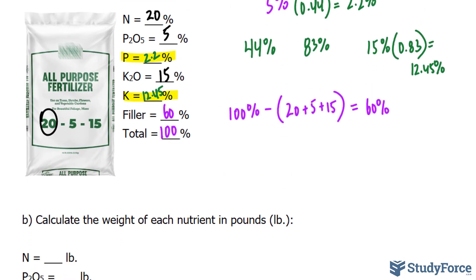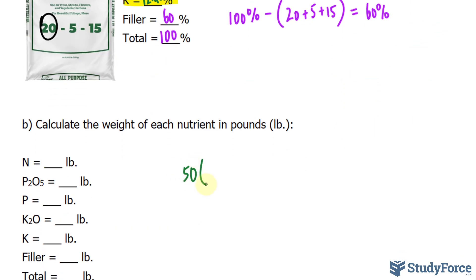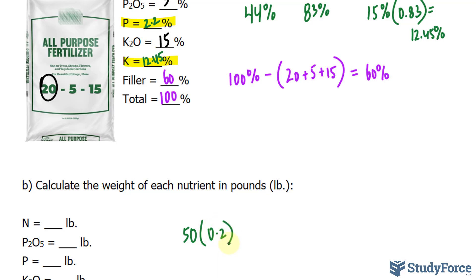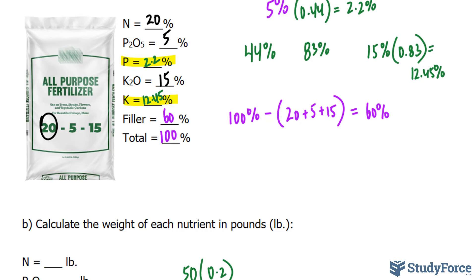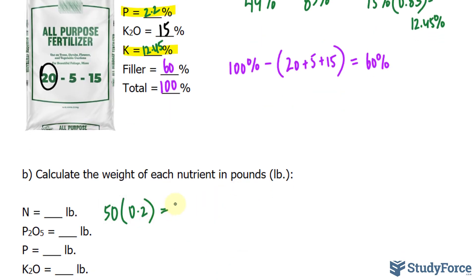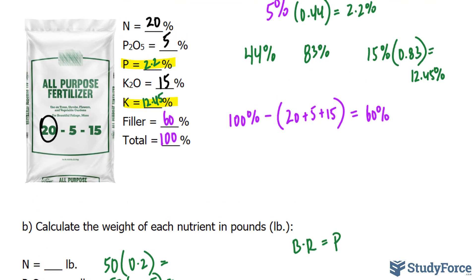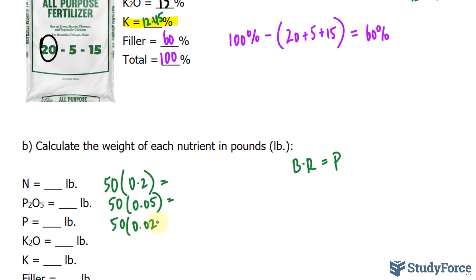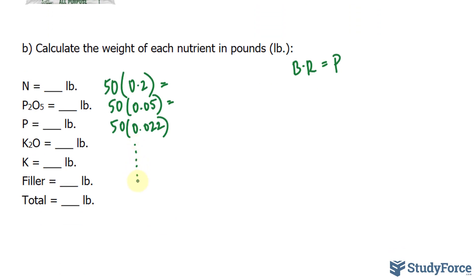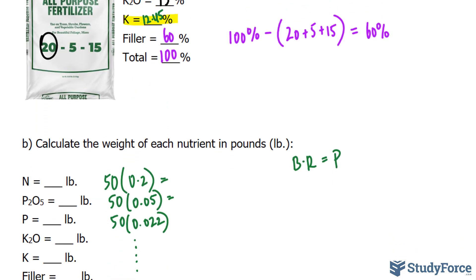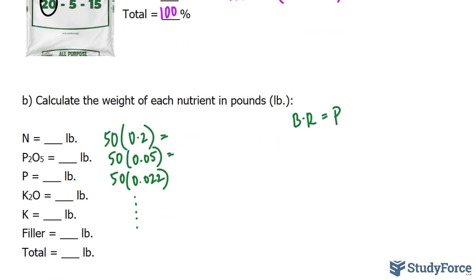So if we want to find the weight of nitrogen, remember that the package is 50 pounds. We'll take 50 pounds and multiply it by 0.2 because 20 divided by 100 is 0.2. And I'll put this right here so that we don't run into any confusion. And for all of these, again, I'm using the formula BR, or B times R is equal to P. So for this one, I'll take 50 times 0.05. Remember the percentage of P2O5 was 5%. 50 times the percentage of P only. That was 0.022. And you get the idea. So you take all of these percentages and you keep multiplying them by 50 and you'll find out the weight of each. So I'll show you the first few and then I'll fill in the rest.